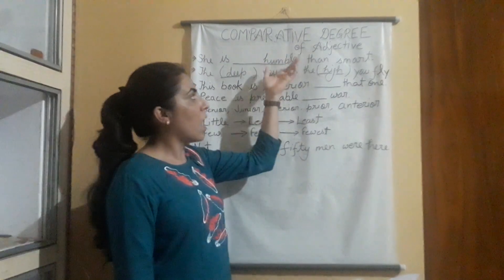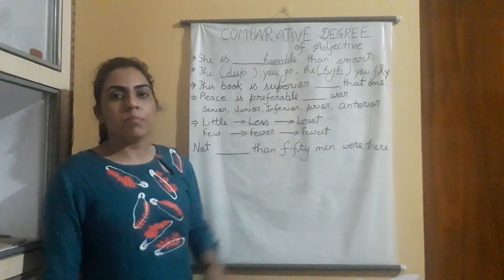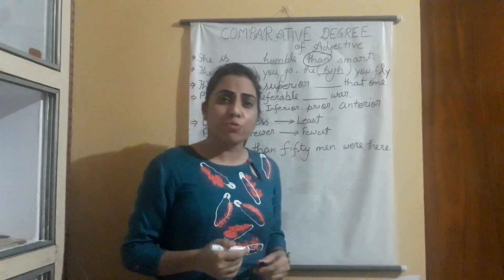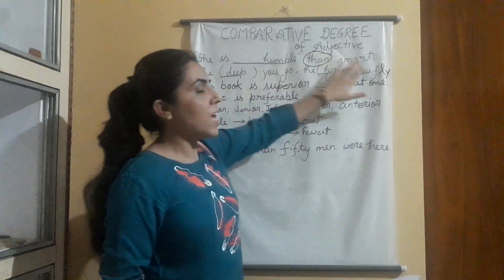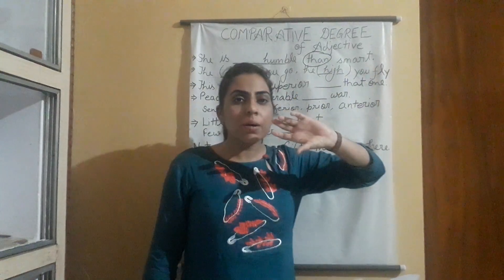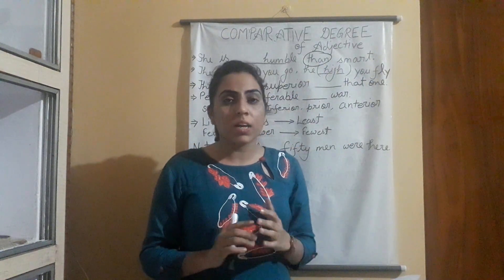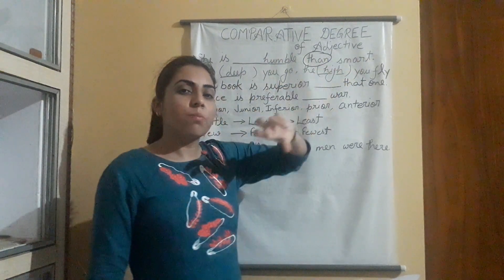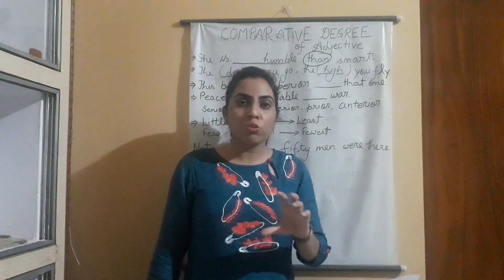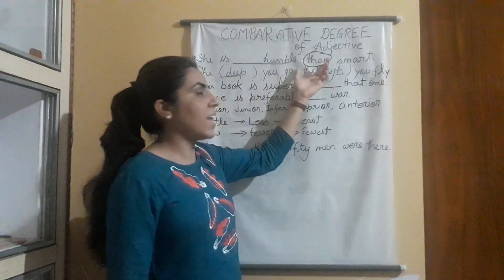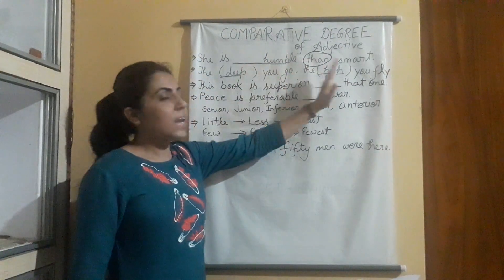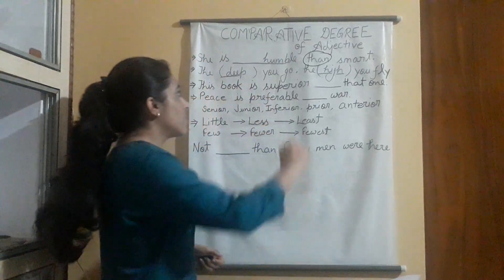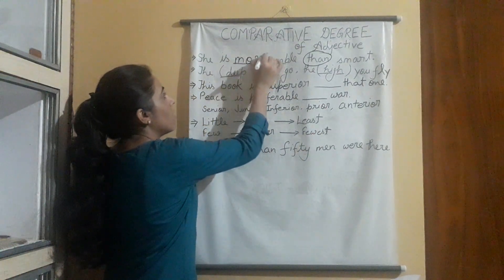For example: 'She is humble than smart.' The keyword is 'than', which is used for comparison between two things. Here, humble and smart are two adjectives being compared. When we have two adjectives in comparison, we use 'than', but we don't write 'humbler' — we simply use M-O-R-E, 'more'.